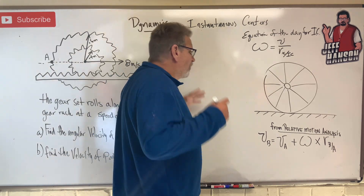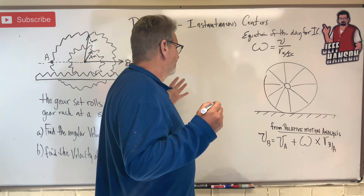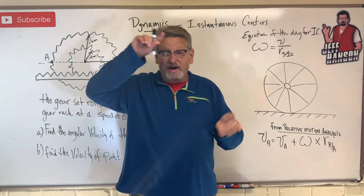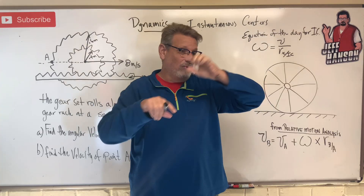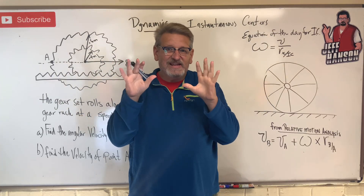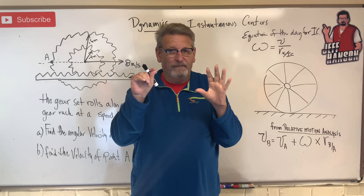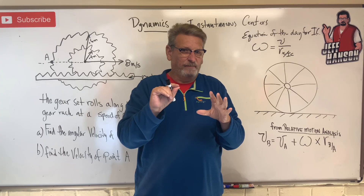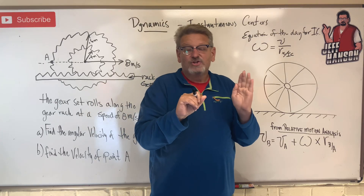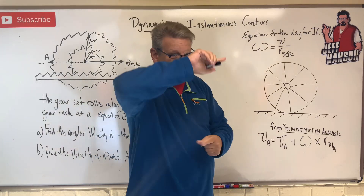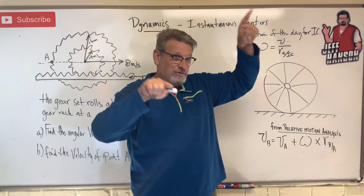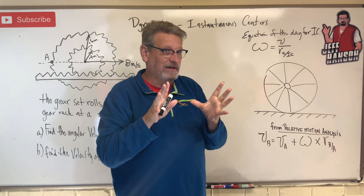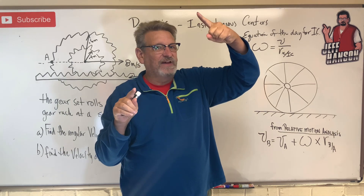So what in the world is an instantaneous center? An instantaneous center is: if a body is rotating in space, I don't care where it is or how it's rotating, there is a point in space for that body that the whole body is rotating around. We call that point the instantaneous center. So if I draw the velocity as a body is rotating in space, as I draw the velocity of any point on that body, the direction - the vector of that velocity -